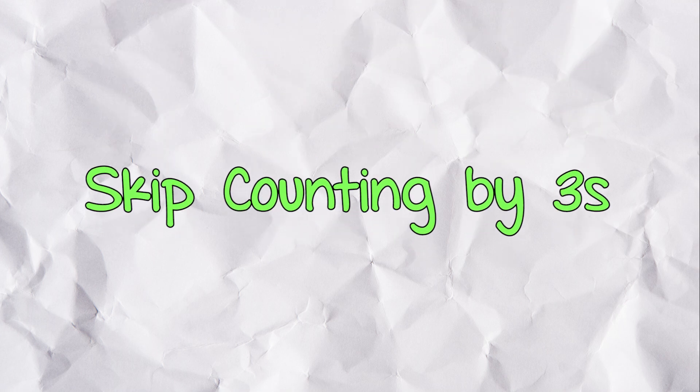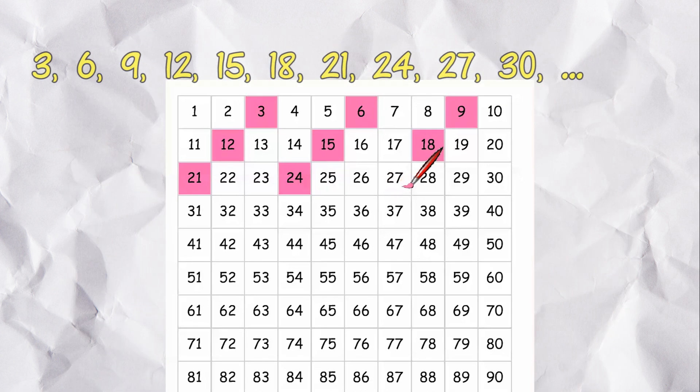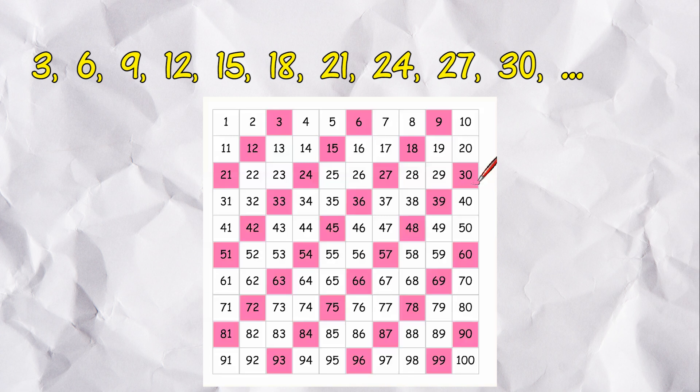Skip counting by 3s is 3, 6, 9, 12, 15, 18, 21, 24, 27, 30, and so on.